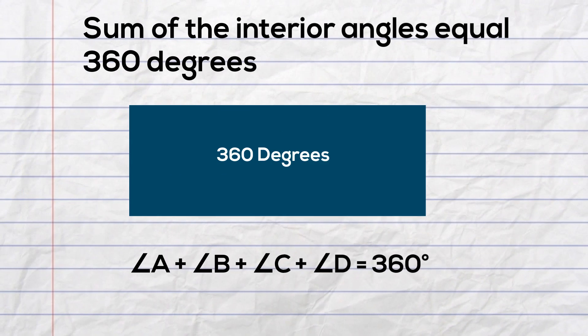The sum of the interior angles of a quadrilateral equal 360 degrees. So angle A plus angle B plus angle C plus angle D all add to 360 degrees. You can use this to help find missing angles.